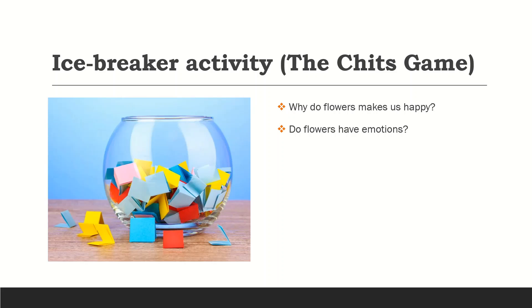The second question, which can be in any of the jet colors, is: do flowers have emotions? If someone asked me, I would say that since plants do not have a central nervous system, it is said to be impossible for them to have emotions or the ability to reason or feel. The next question is: do plants turn towards the Sun?